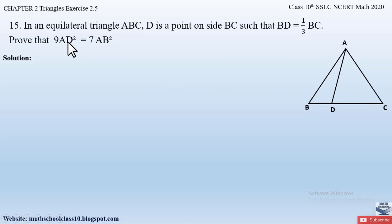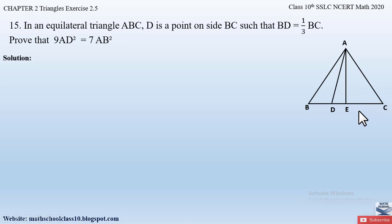To obtain the square value of any side, this can be done by applying the Pythagoras theorem. However, there is no right angle triangle in the figure as drawn. So for that, let us draw an altitude AE perpendicular to BC. Since an altitude forms a 90 degree angle with the base, right angle triangles are formed on both sides of this altitude, so we can apply the Pythagoras theorem.